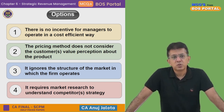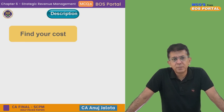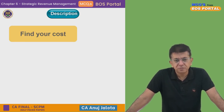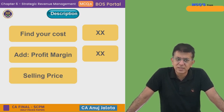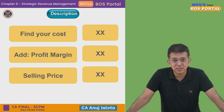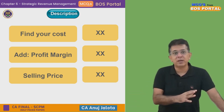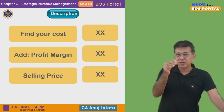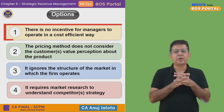The question asks which is NOT a disadvantage of the cost-plus pricing approach. Cost-plus pricing is where you first find out your cost, then fix a profit margin, and from that you get the selling price. Now let's think about what drawbacks arise when you fix the selling price this way — we have to identify which of the four options is not actually a drawback.